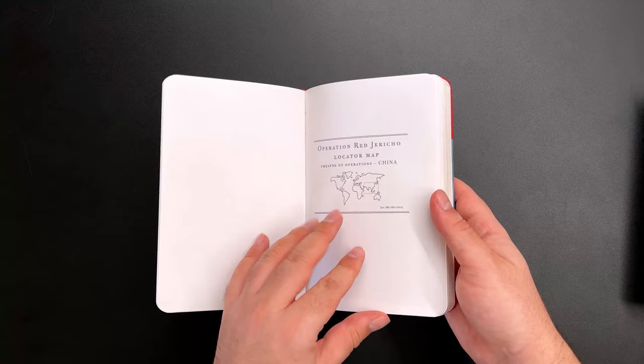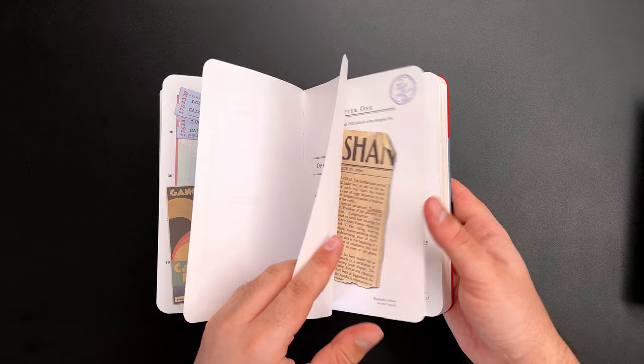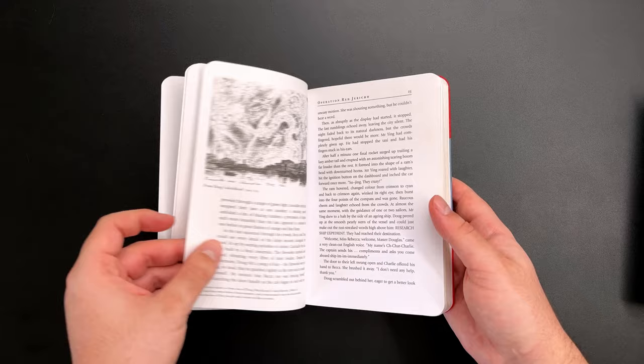The premise of the books is that they're all based on the diary of one of the main characters and supported by an extensive archive of materials that relate to the adventures.